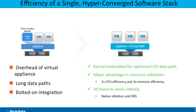Here you can see the advantages of using a single hyperconverged software stack. It replaces the complexities listed on the left with the efficiencies on the right. vSAN is kernel embedded for optimal IO data path. It provides a major advantage in resource utilization — double the CPU and triple the memory utilization — and all features work natively. Some examples are native vMotion and native DRS.